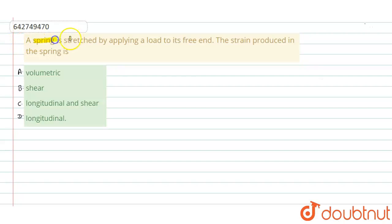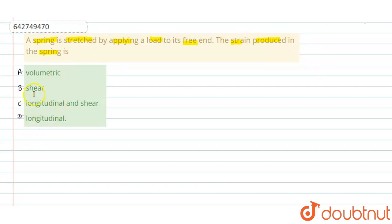A spring is stressed by applying a load to its free end. The question asks: what type of strain is produced in the spring? We have four options: A) volumetric, B) shear, C) longitudinal and shear, D) longitudinal. We have to determine which of the following is correct.